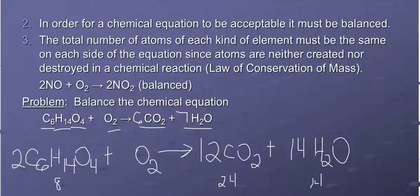I already have eight in the C6H14O4, so I need 30 more. So that means that coefficient has to be 15. So my coefficients in the balanced equation, 2, 15, 12, and 14, and it now obeys the law of conservation of mass.